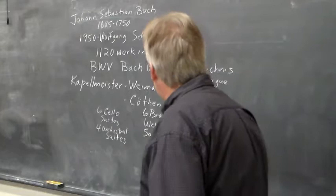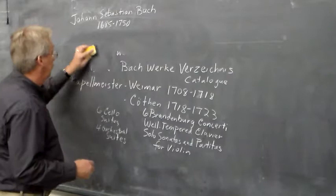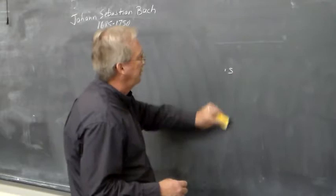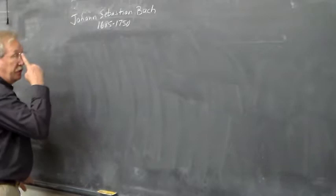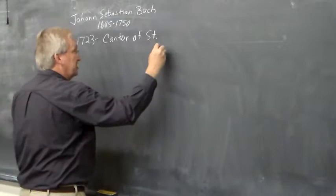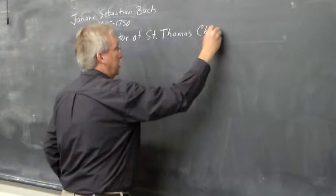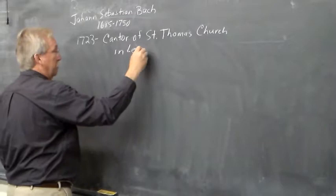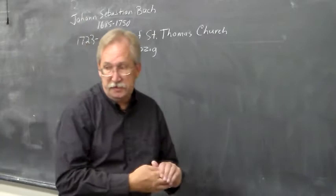In 1723, Bach won the most important position in the Protestant world, at that time in Germany, when he was appointed the cantor of the St. Thomas Church. And that was in Leipzig.